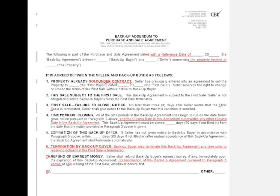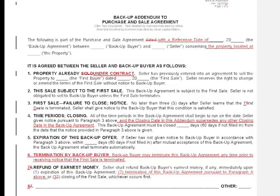The backup addendum — Form BUA — has mostly formatting changes. In section six, we clarified that the buyer can terminate the backup agreement at any time prior to receiving notice that the first sale is terminated — meaning until this backup buyer is accepted by the seller and there's a binding transaction, the buyer is free to walk away at any time. In section four, we clearly state that the closing date in this addendum supersedes any conflicting closing date in the accompanying PSA.